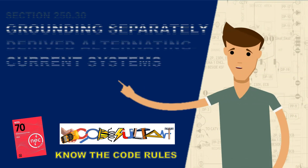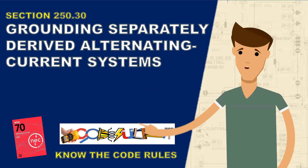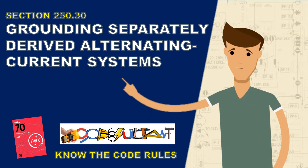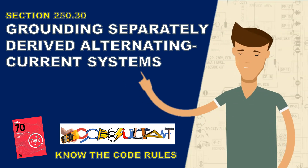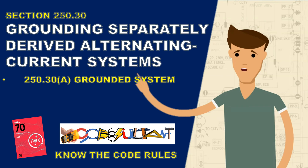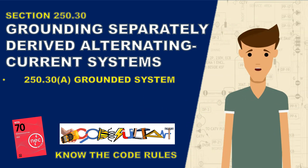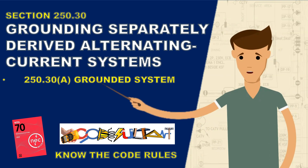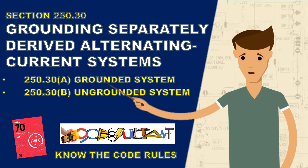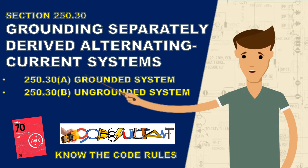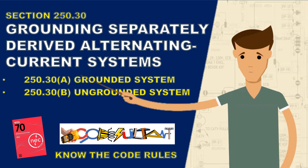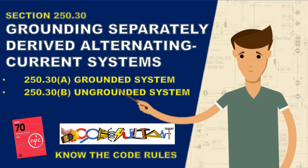Grounding of separately derived systems is divided into two parts. The first part addresses separately derived systems within grounded systems under 250.30 A, and the second part is for separately derived systems within ungrounded systems under 250.30 B.